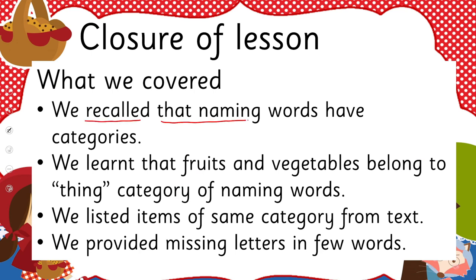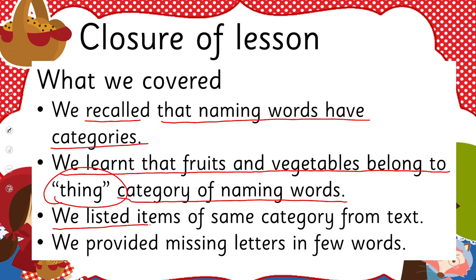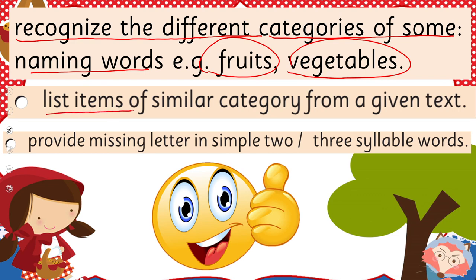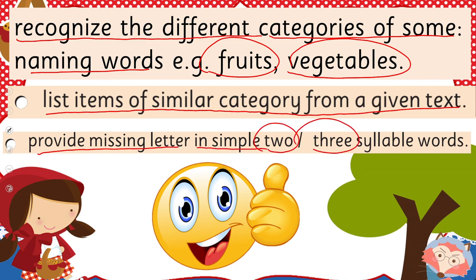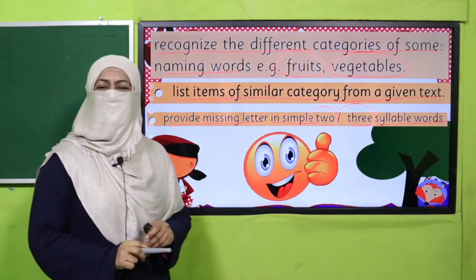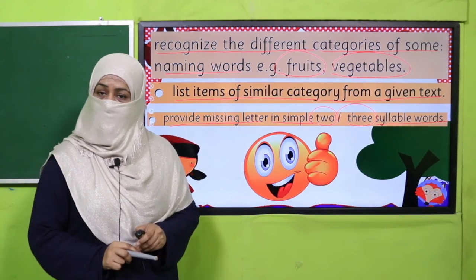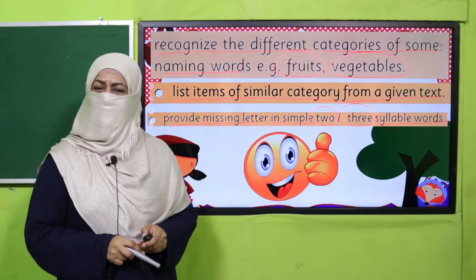Students, here is a word puzzle which you are going to complete using the clues given. So what we learned today: naming words have categories; fruits and vegetables belong to the 'thing' category of naming words; we listed items of the same category from a text; and we provided missing letters in a few words. In this way, we achieved our SLOs: recognize different categories of naming words, list items of similar category from a given text, and provide missing letters in simple two or three syllable words. That's it for today — tomorrow I'll come again with a very interesting lecture. Keep learning and take very good care of yourself. Thank you and Allah Hafiz!